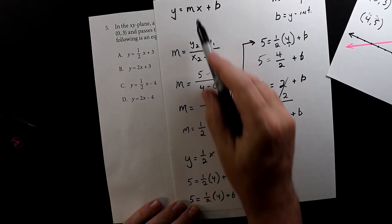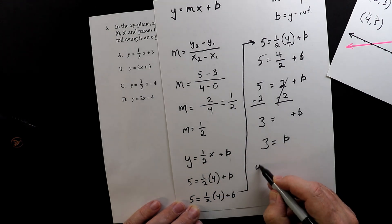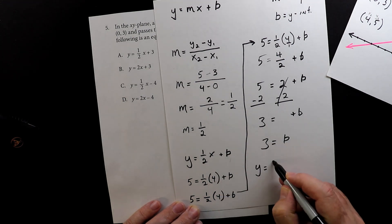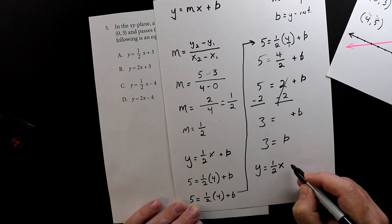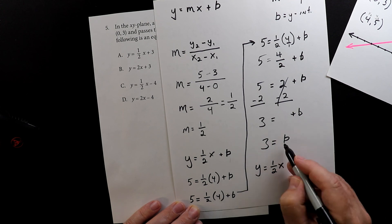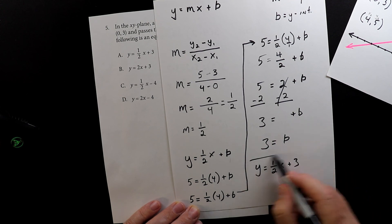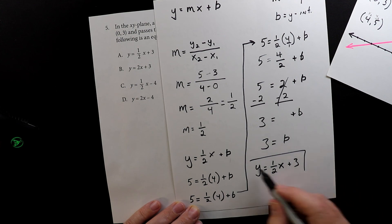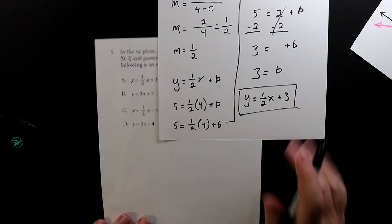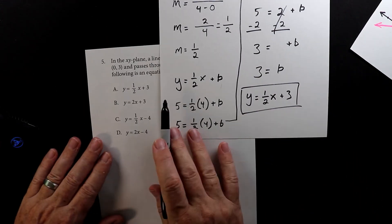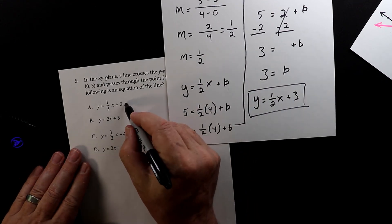Now for y equals mx plus b, we know m equals one-half and b equals 3, so the equation is y equals one-half x plus 3. Looking at the answer choices, that's number one — that's our answer.